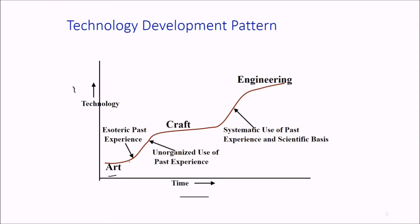Software engineering was initially an art with esoteric past experience. Then it became craft with organized use of past experience. It gradually increased with time, showing systematic use of past experience plus scientific basis. Now we're in times where we call it engineering. In the build-and-fix era, programs were quickly developed without specification, plan, or design.